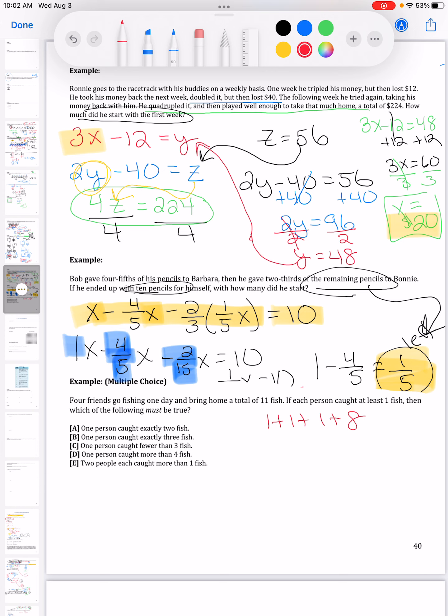So since it said must be true instead of could be true, what I'm really going to do is eliminate all the false answers. I'll be checking to see if I can make eleven not using what's down here so I can eliminate, and if I cannot eliminate it then it has to be true.